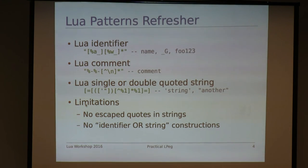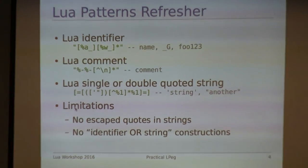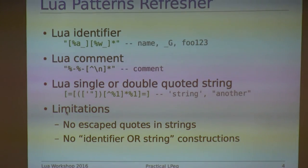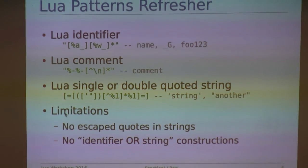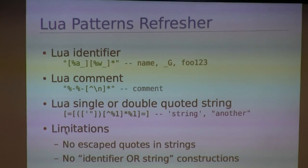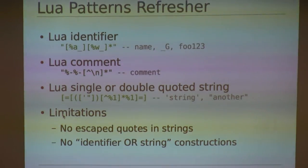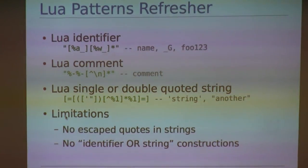So before I jump into LPEG, let's have a brief refresher on Lua patterns. This will make the transition to LPEG a little bit easier to understand. So I've listed here three examples of patterns that you can match using Lua. There's a Lua identifier, like the name of a function, the name of a variable, or the name of a table. In the first pattern, we're looking to match a single alphabetic character, or an underscore character, followed by any number of alphanumeric and underscore characters. So this is pretty straightforward.